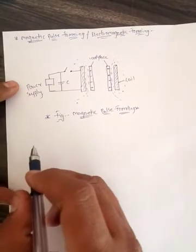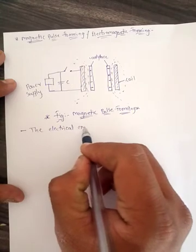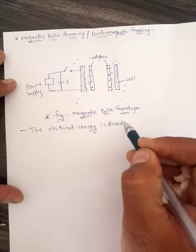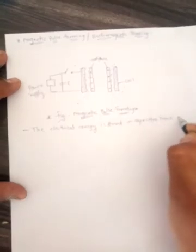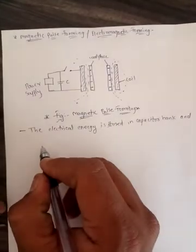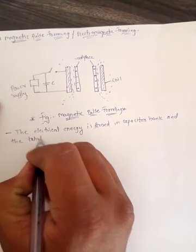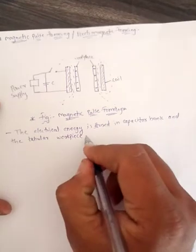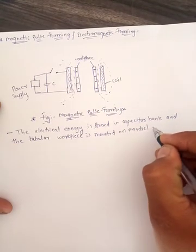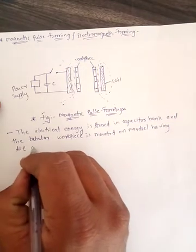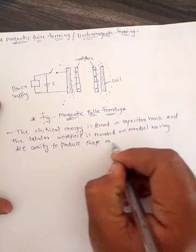Working: the electrical energy is stored in capacitor. The tubular workpiece is mounted on mandrel. The coil having die cavity to produce shape on tube.